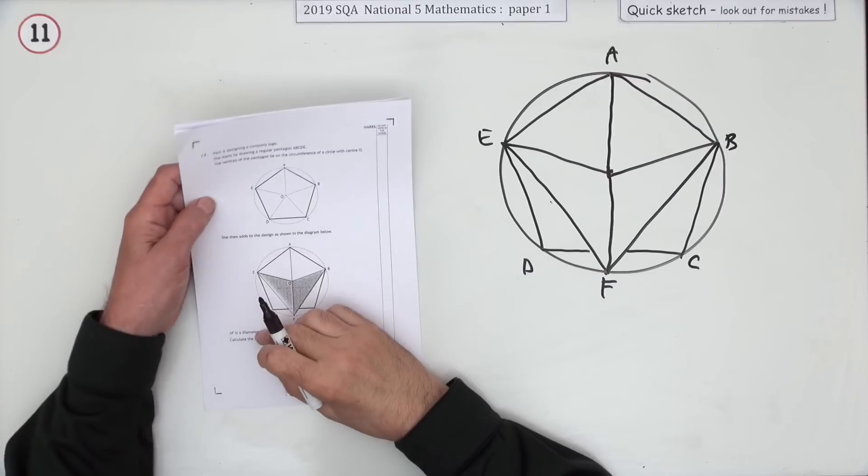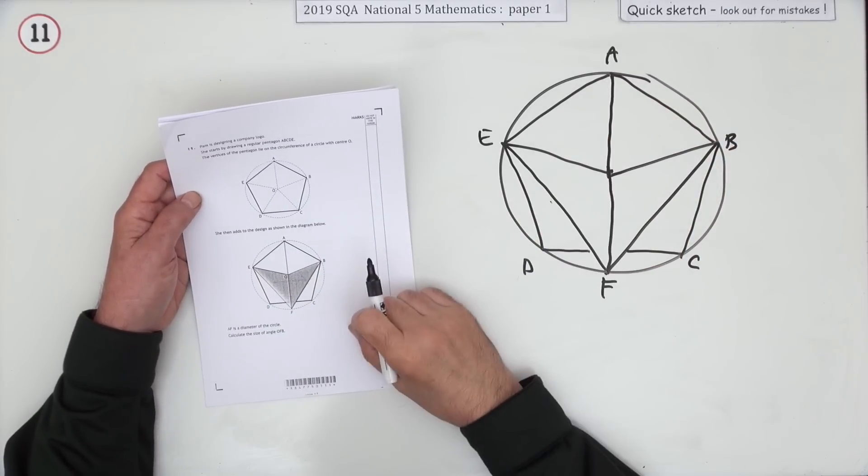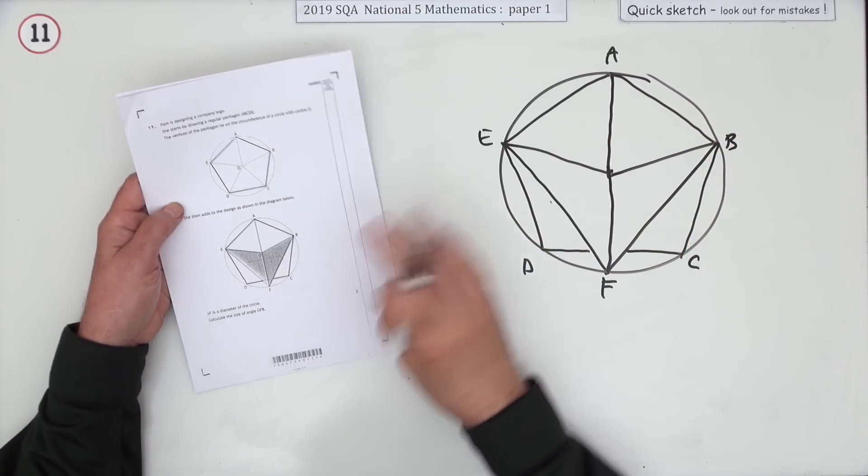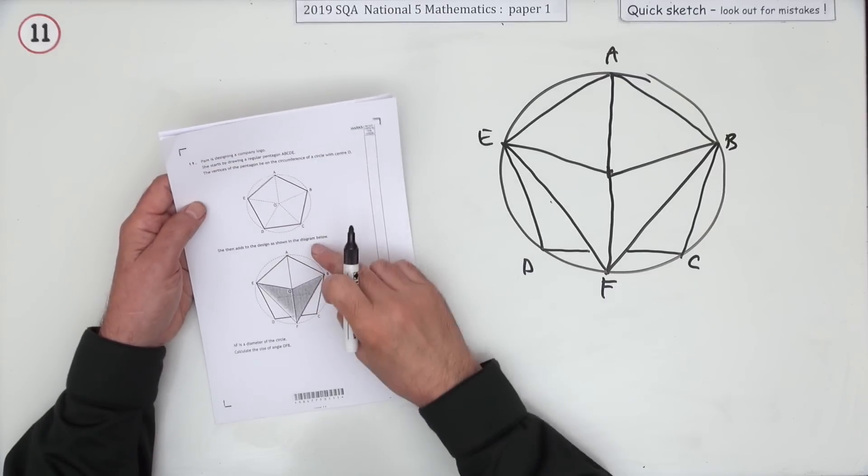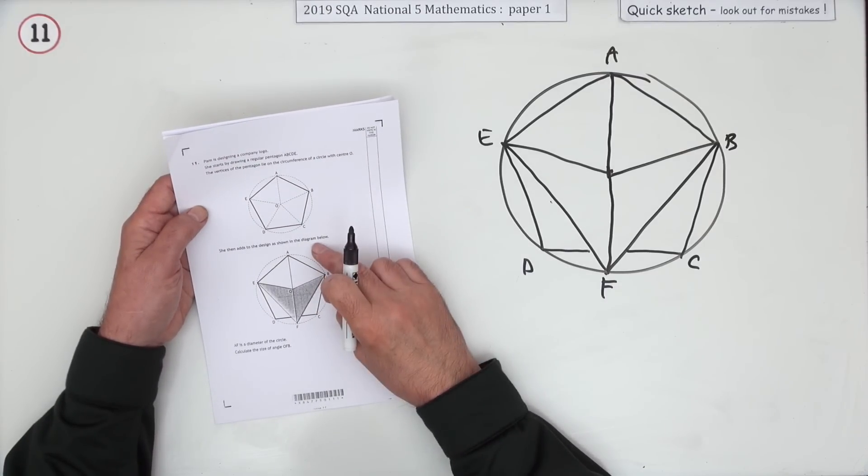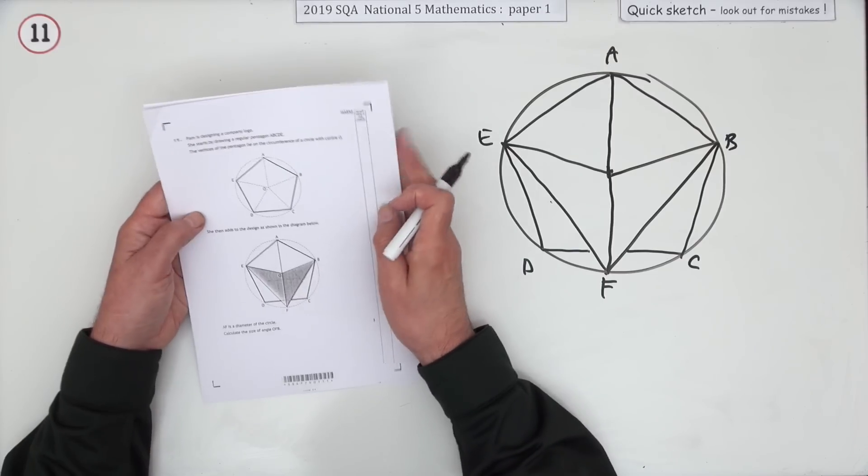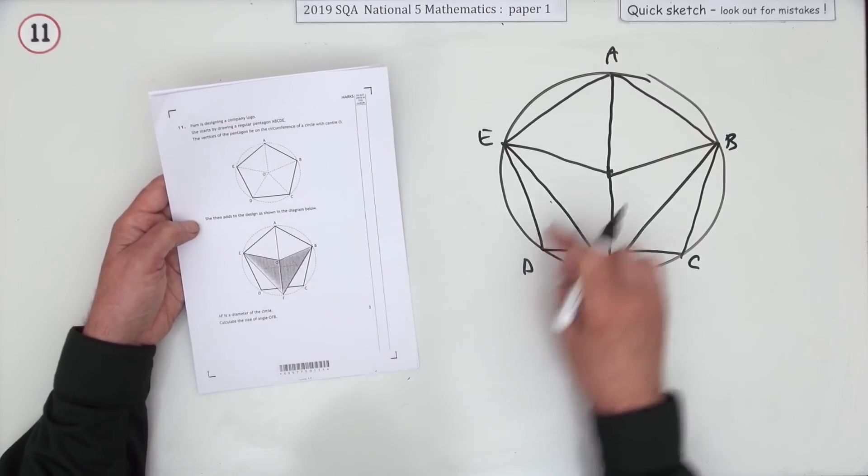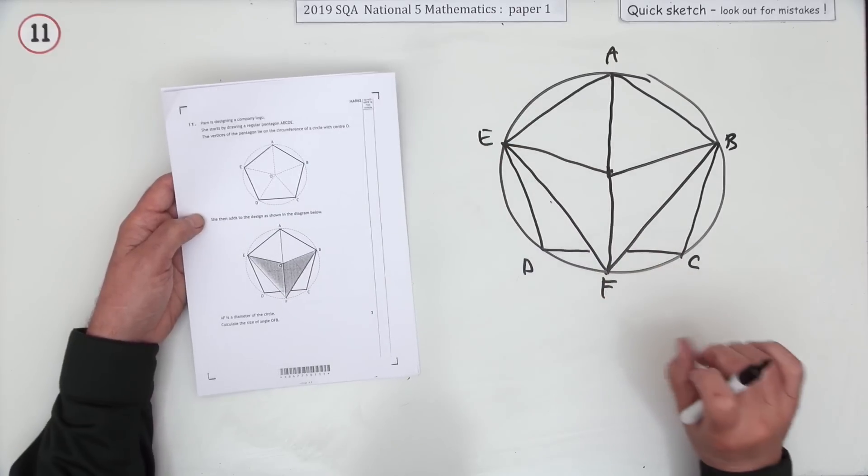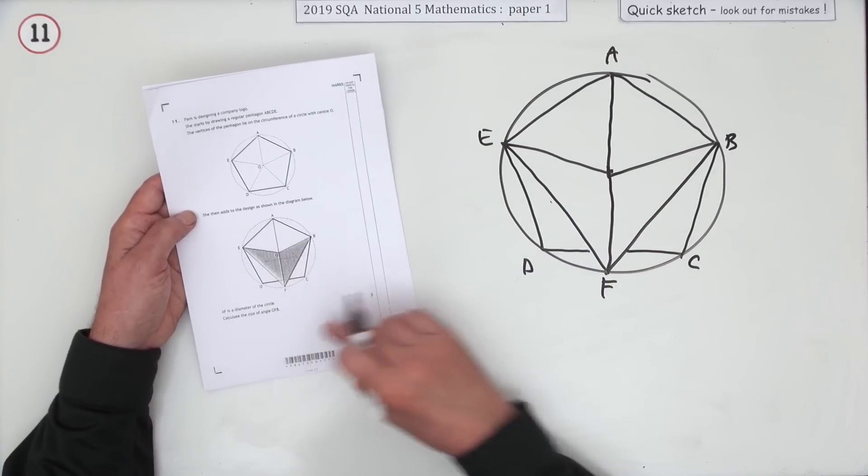Number 11 then. There we go, there's a diagram involving circles and angles, three marks for finding a certain angle. Pam is designing a company logo. She starts by drawing a regular pentagon inside of a circle, then adds this extra bit for a bit of ingenuity here, this little kite at the bottom.